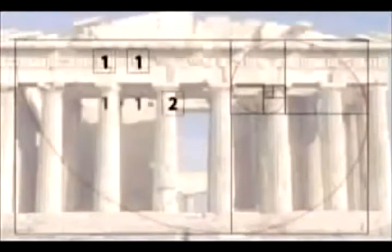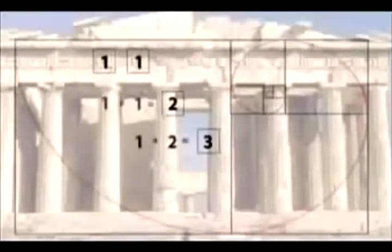In the 13th century, a mathematician named Leonardo Fibonacci discovered an important number sequence. It's a very simple sequence of numbers, starting with the number one twice. Each succeeding number in the sequence is the sum of the two preceding ones.